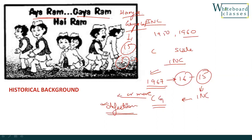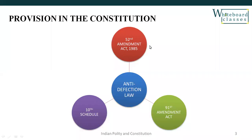To stop and discourage defection, a law was introduced in 1985 called the Anti-Defection Law. In 1985, the 52nd Amendment was introduced in the Constitution, which created the Anti-Defection Law. In the 52nd Amendment, the 10th Schedule was also added to the Constitution, and all provisions related to the anti-defection law are included in the 10th Schedule.